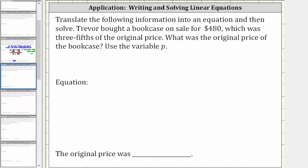We're asked to translate the following information into an equation and then solve. Trevor bought a bookcase on sale for $480, which was three-fifths of the original price. What was the original price of the bookcase? Use the variable p.